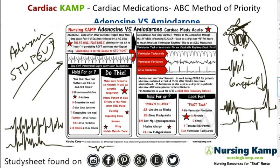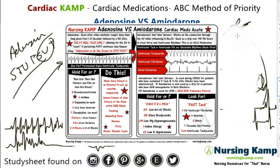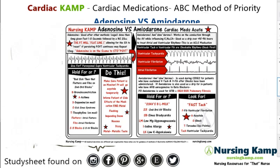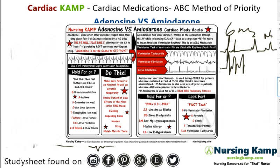That's the ideal situation. But if that doesn't happen, we can repeat adenosine. We give 12 milligrams as the second dose. So you start with 6 milligrams, push, flat line, and hopefully it converts to normal sinus rhythm. But if it repeats itself, we give adenosine 12 milligrams and repeat.